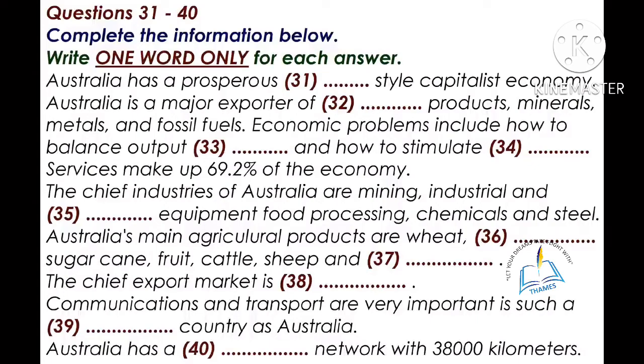The country of Australia is made up of six states and two territories: the Australian Capital Territory, New South Wales, the Northern Territory, Queensland, South Australia, Tasmania, Victoria, and Western Australia. The national capital is Canberra.